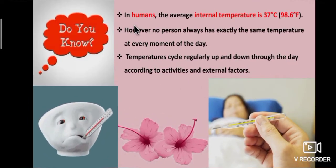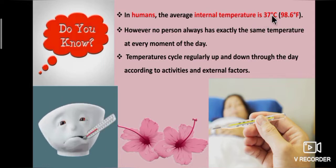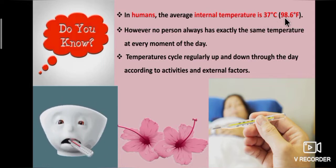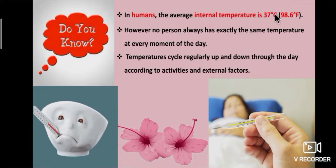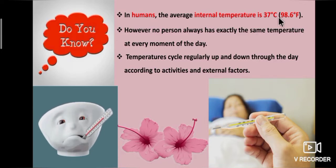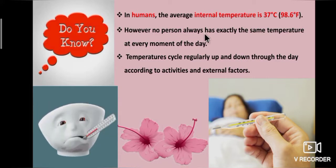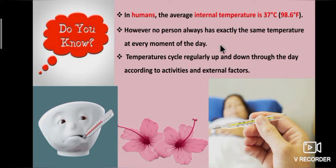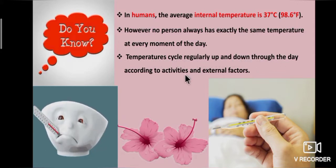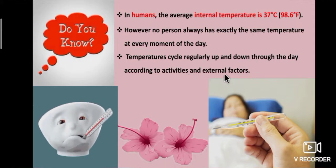In humans, the average internal temperature is 37°C or 98.6°F. However, no person always has exactly the same temperature at every moment of the day. Temperatures cycle regularly up and down through the day according to activities and external factors.